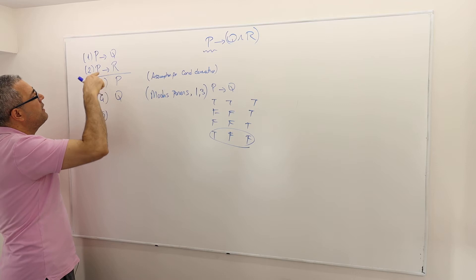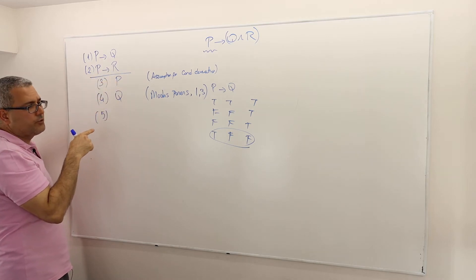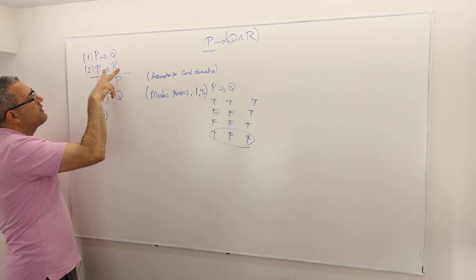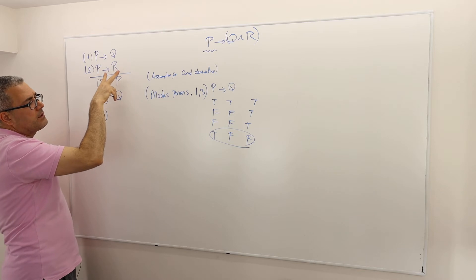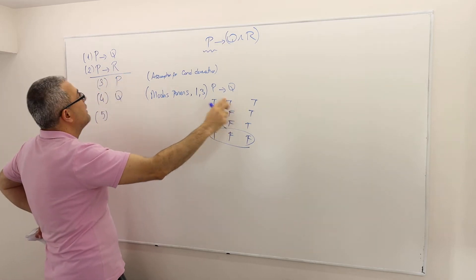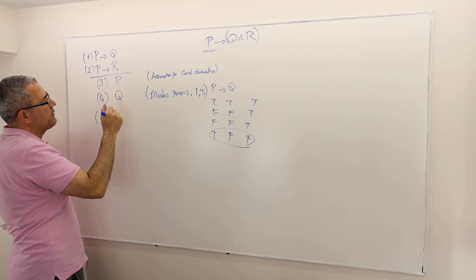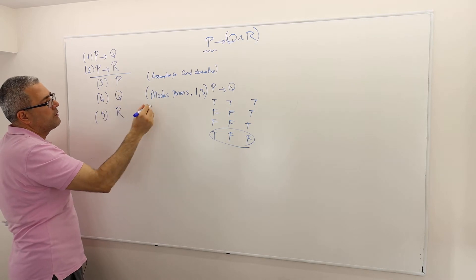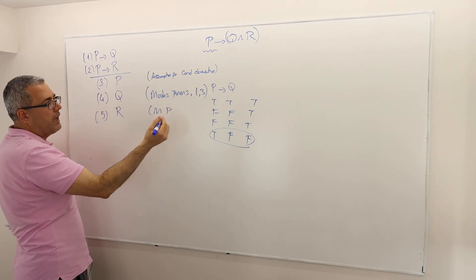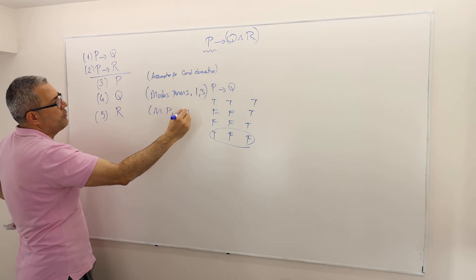Given that P is true and P implies R is true, R must be true as well. This is again modus ponens — modus ponens of arguments two and three.